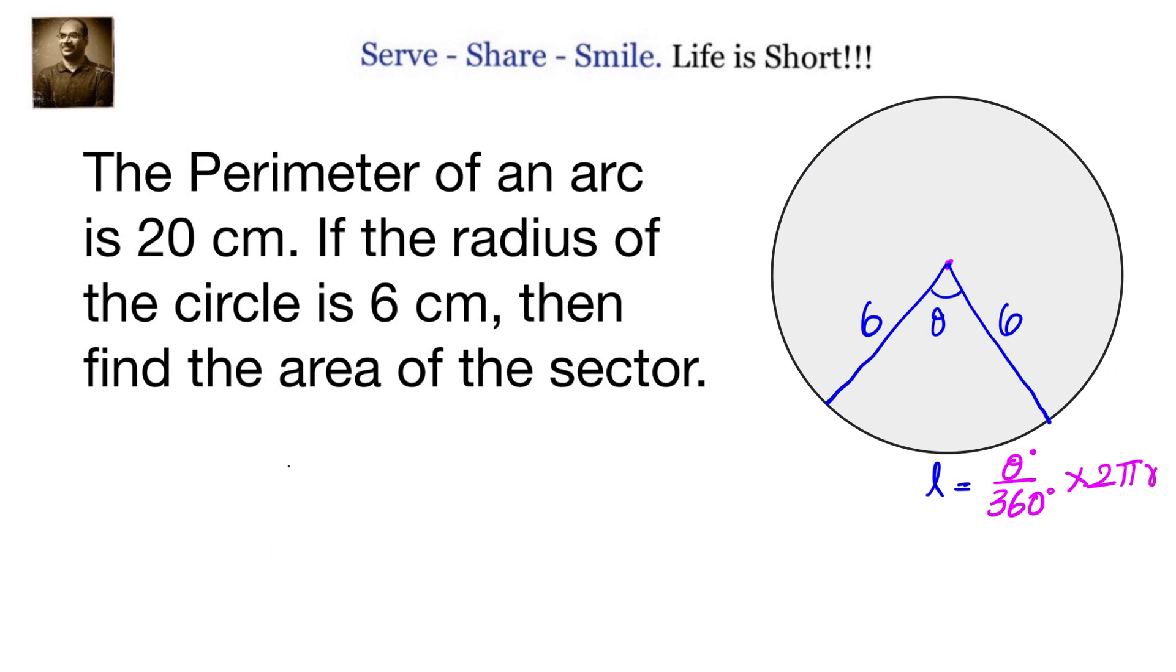The perimeter is l plus 2 times of radius which is l plus 2r. And what is the area of the sector in this scenario? That is given by theta by 360 into pi r square.